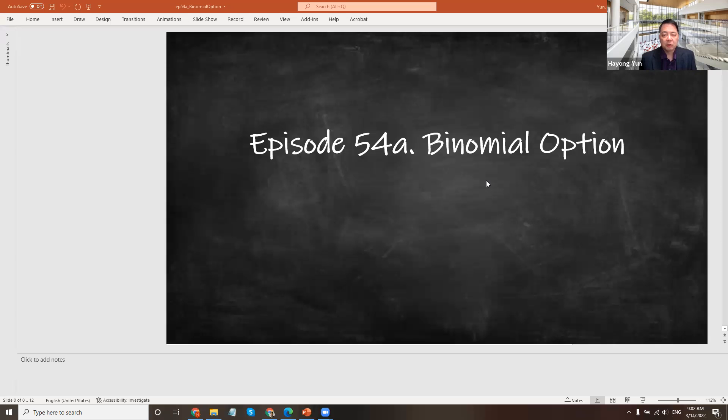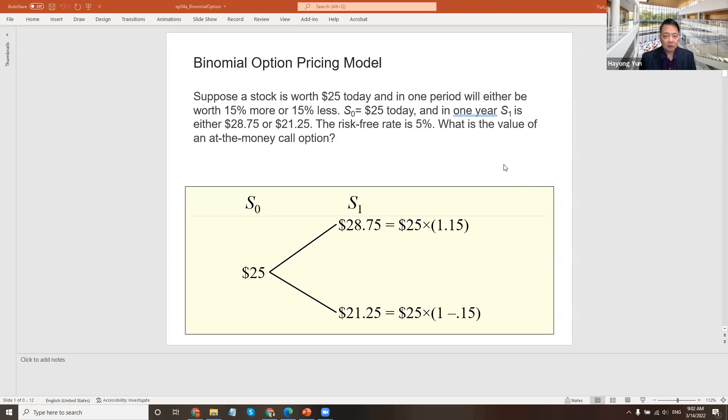Hello. In this episode, we are going to talk about binomial options. This is one method of pricing options numerically. Here is a very simple example of a two-period model of stock price. Initially, at day zero, the stock price is $25.